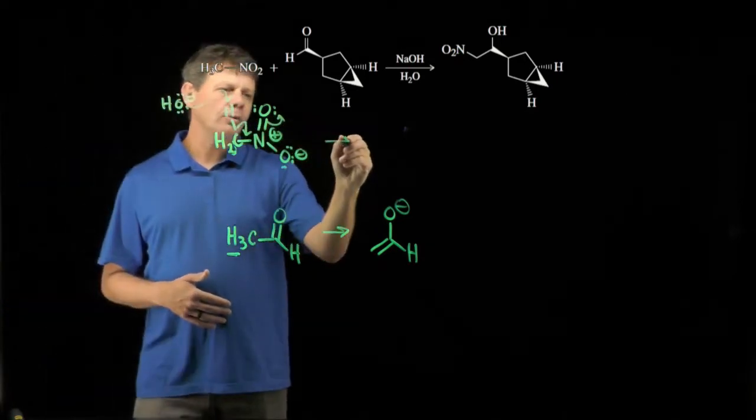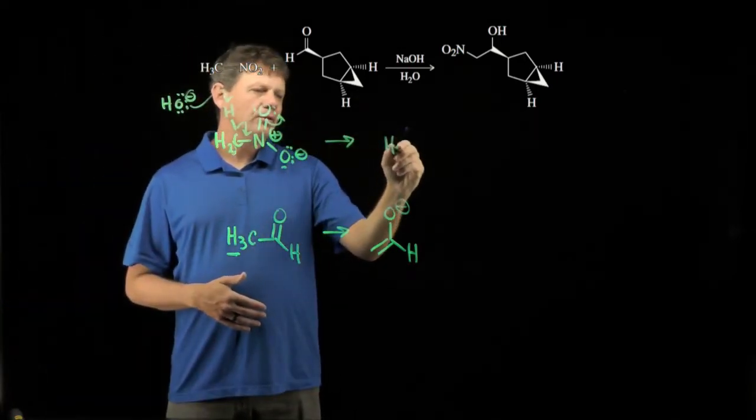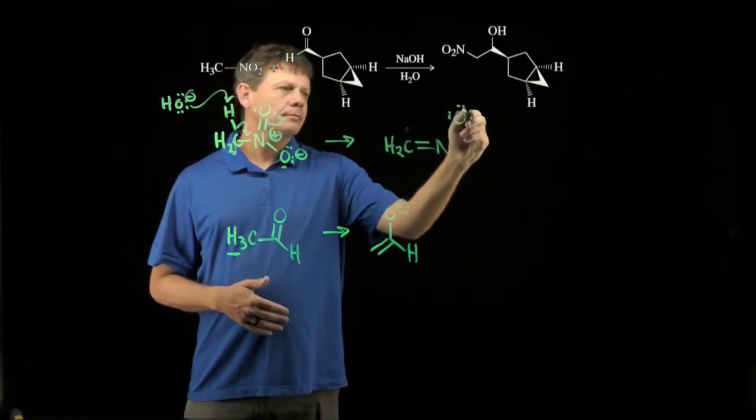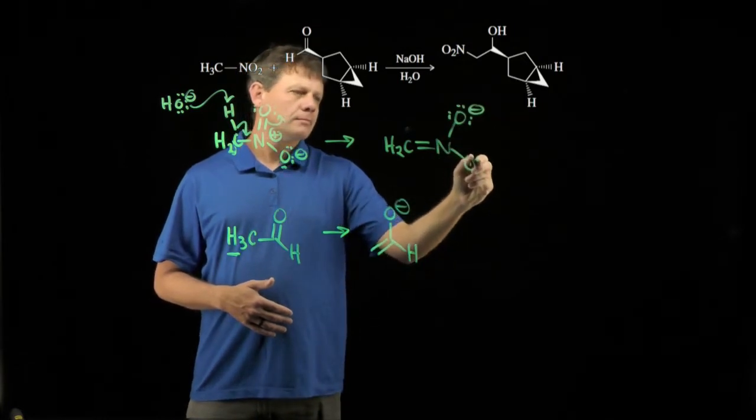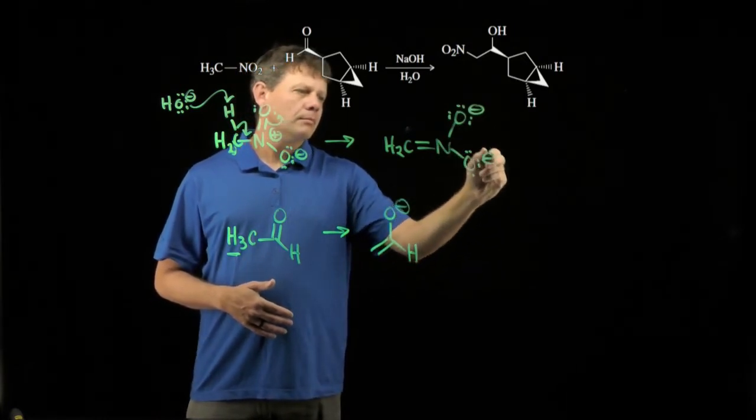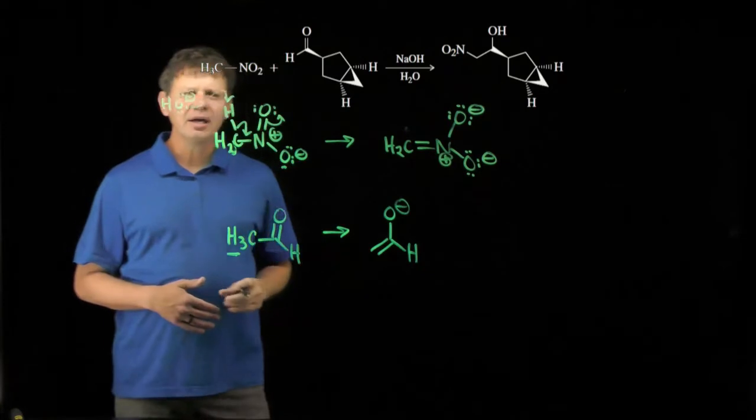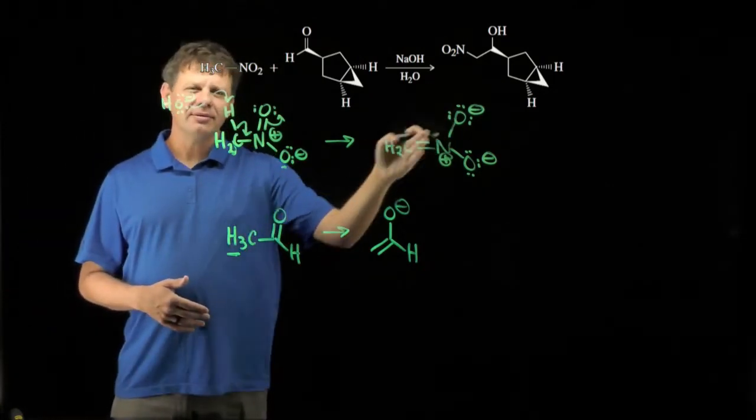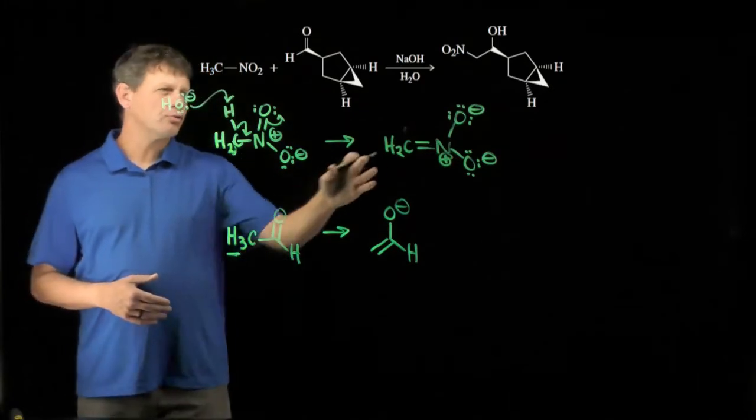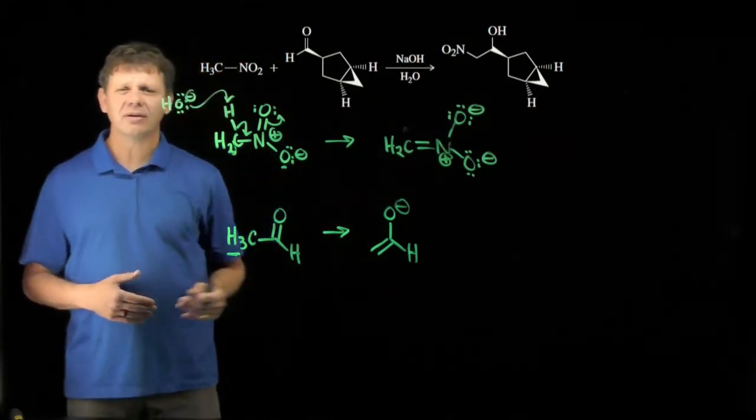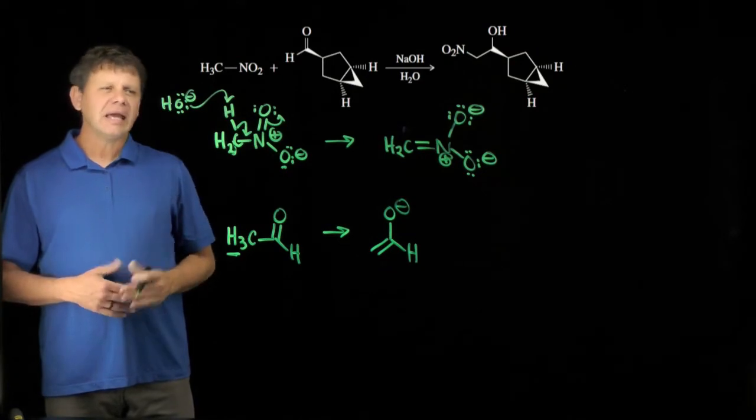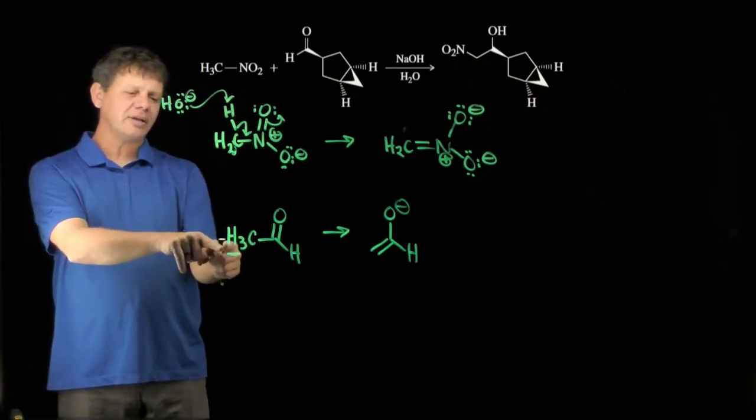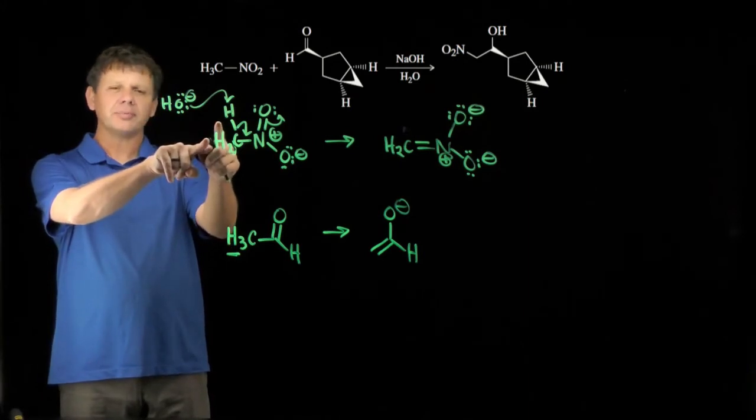We can draw a resonance structure that looks like this. Yes, there's a positive charge on the nitrogen, but we can stabilize that conjugate base through drawing this resonance structure here which looks identical to this one. And so the two molecules that we normally see in an aldol reaction has an acidic proton. This proton is probably acidic.